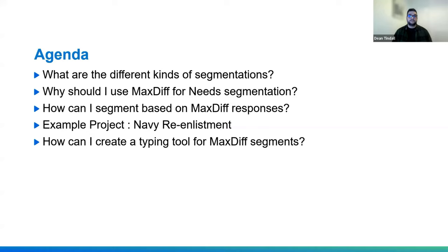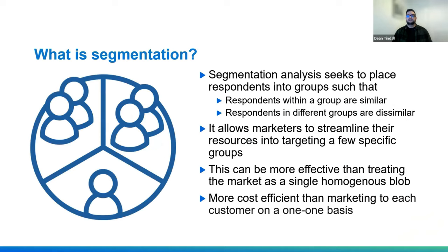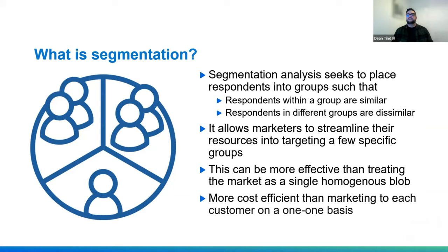Firstly, we're going to kick off with what the different kinds of segmentation are, and what we mean by segmentation. When we're talking about segmentation, we're talking about a form of analysis that seeks to place respondents into groups so that within a group everyone is very similar, and out of group everyone is very different. Marketers use this technique to streamline resources into targeting as few specific groups as possible — more effective than marketing to a single homogenous group, and more cost-efficient than marketing on a one-to-one basis.